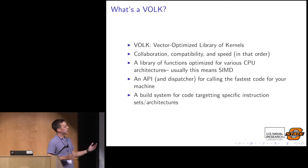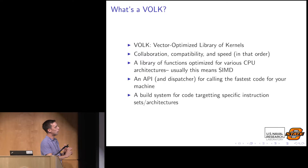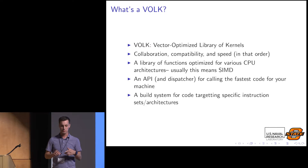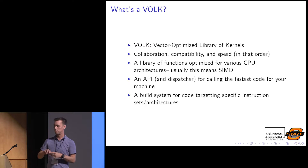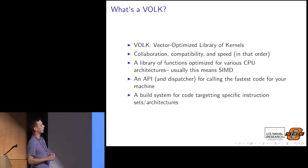VOLK is the Vector Optimized Library of Kernels. It has three priorities: collaboration, compatibility, and speed. I'm basically going to go through those three priorities in sort of reverse order because they're actually pretty similarly important to each other.